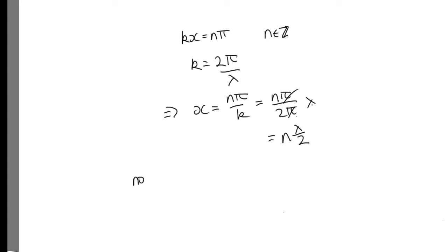So the nodes occur half a wavelength apart at 0, λ/2, 2λ/2, which is just λ, 3λ/2, 2λ, etc.